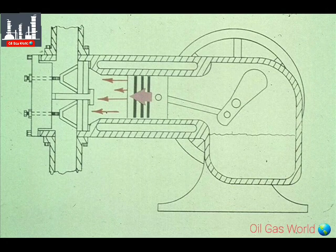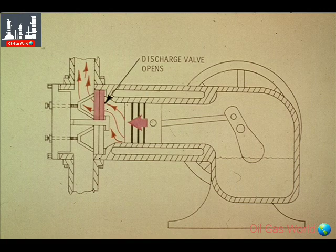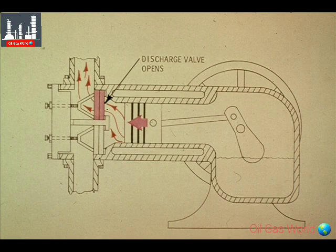The shaft continues to turn, now forcing the piston forward on the compression stroke. The pressure is built up inside the cylinder until it forces the discharge valve to open, and the compressed air, or gas, is forced into the discharge line. This continues until the piston reaches the starting position.